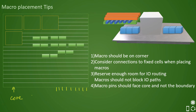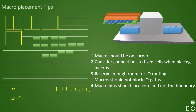We also saw that macro pins should face the core and not the boundary. If there are pins like this, they should face the core because the interaction of the macro is with respect to the core. If pins face the boundary, it eats up routing resources, causes detours, and results in congestion.